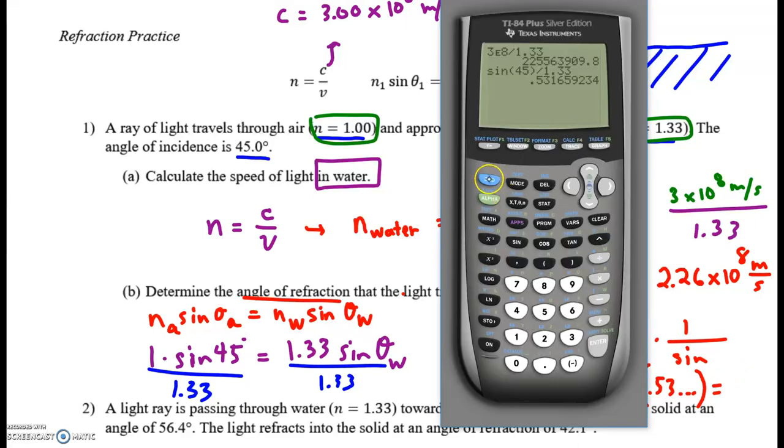So how do we do that on the calculator? We do second sine. And then I need this answer. So I could type out 0.53, blah, blah, blah. But that's annoying, and I'm lazy. So what I do is I do second answer. And it's using the previous answer directly above. 32 degrees.